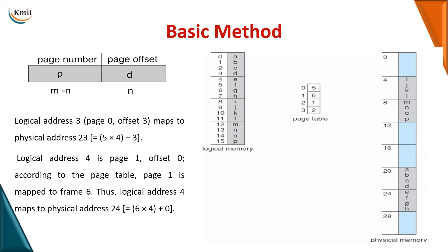In a logical address, M minus N bits are used for the page number and N bits are used for the page offset, where M is the total number of bits for the logical address and N is the number of bits for the page size. So depending on the page size and logical address size, you allocate bits for the page number and page offset.